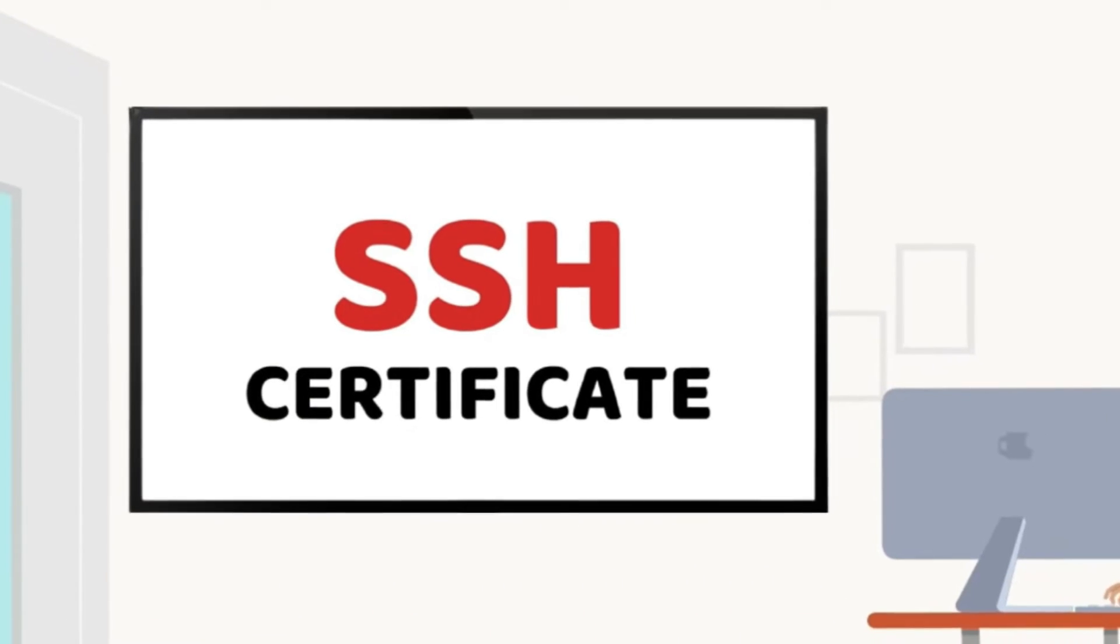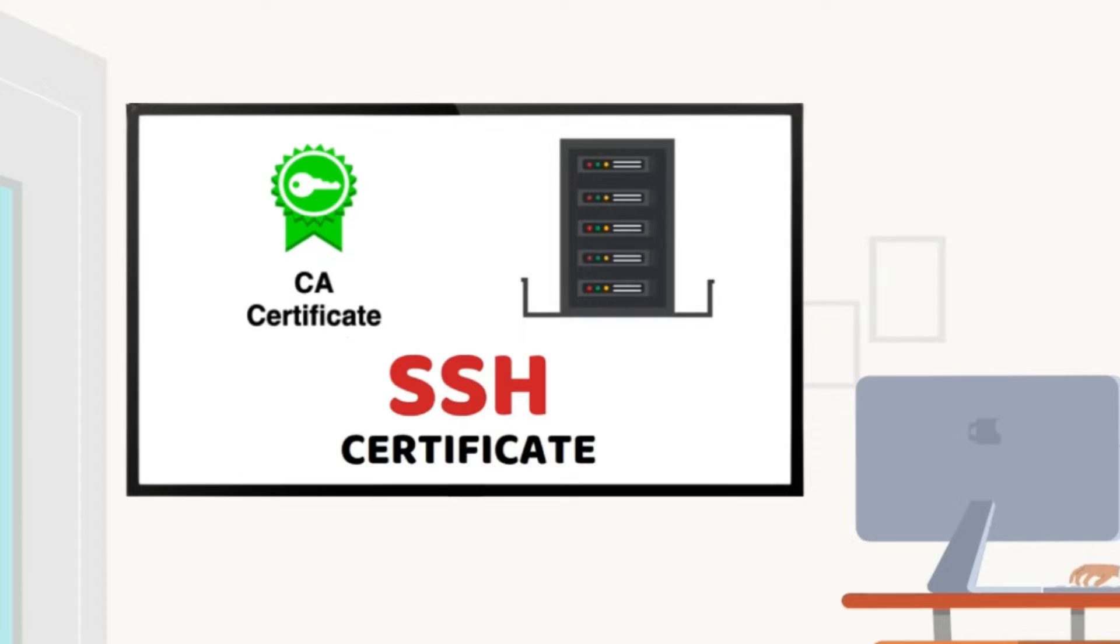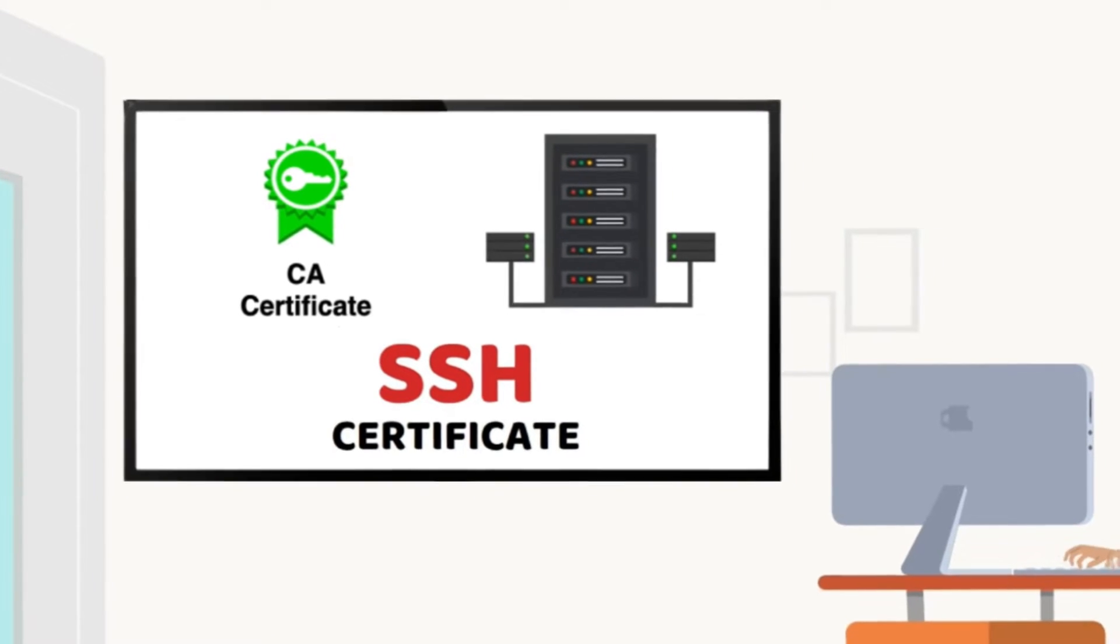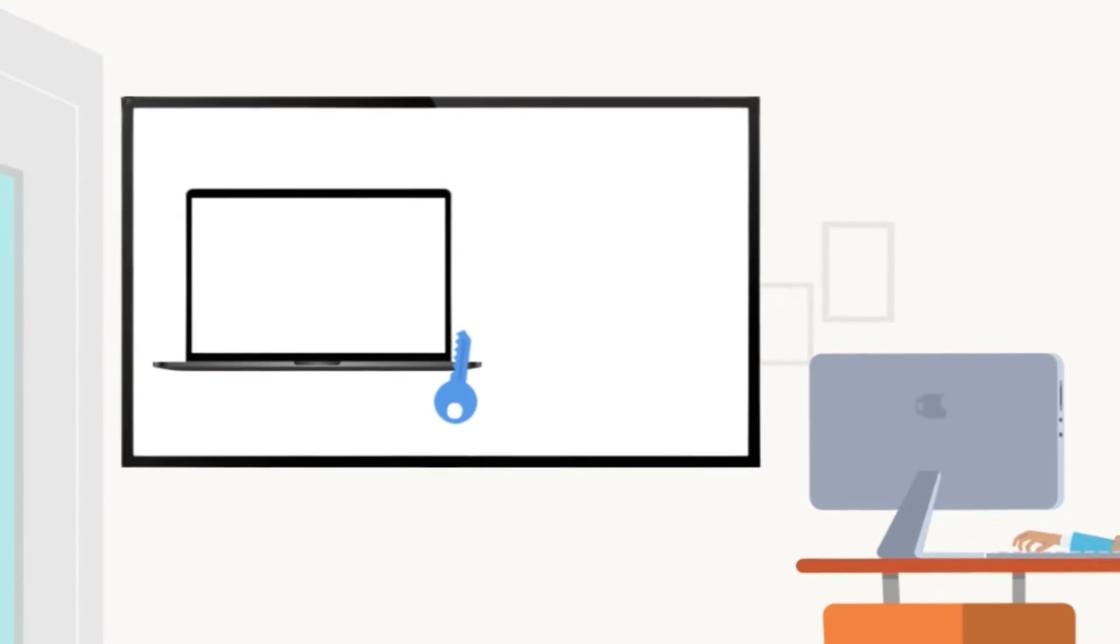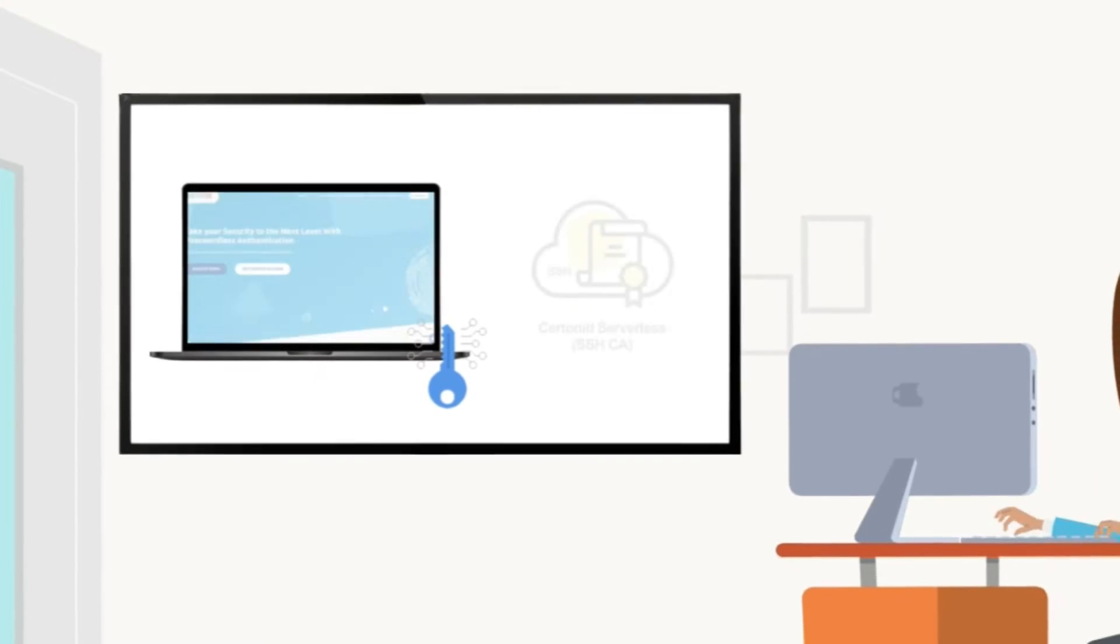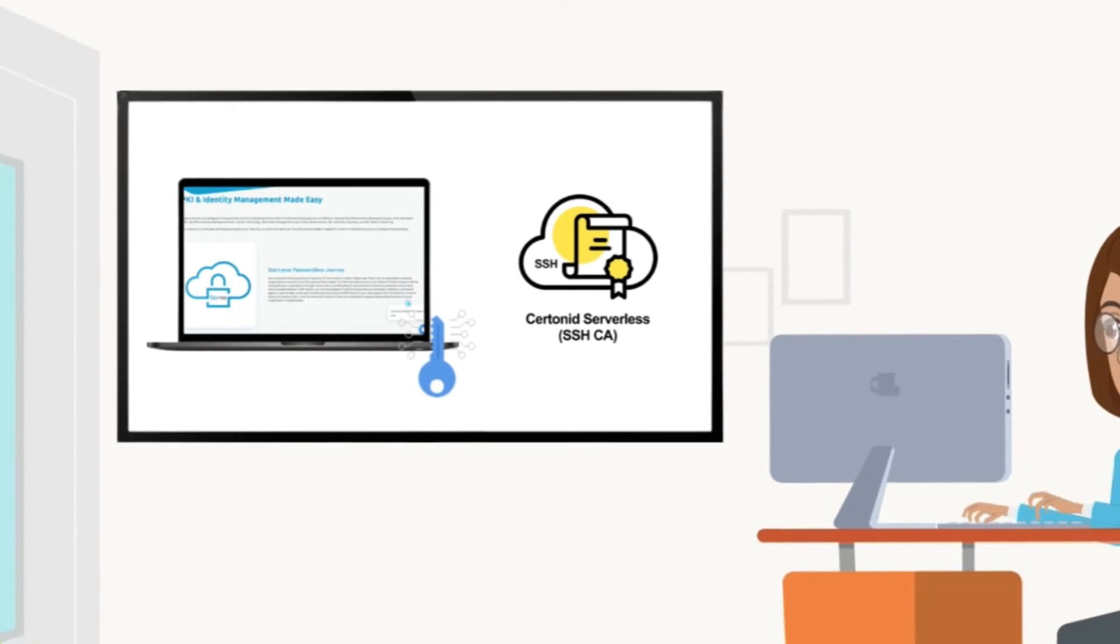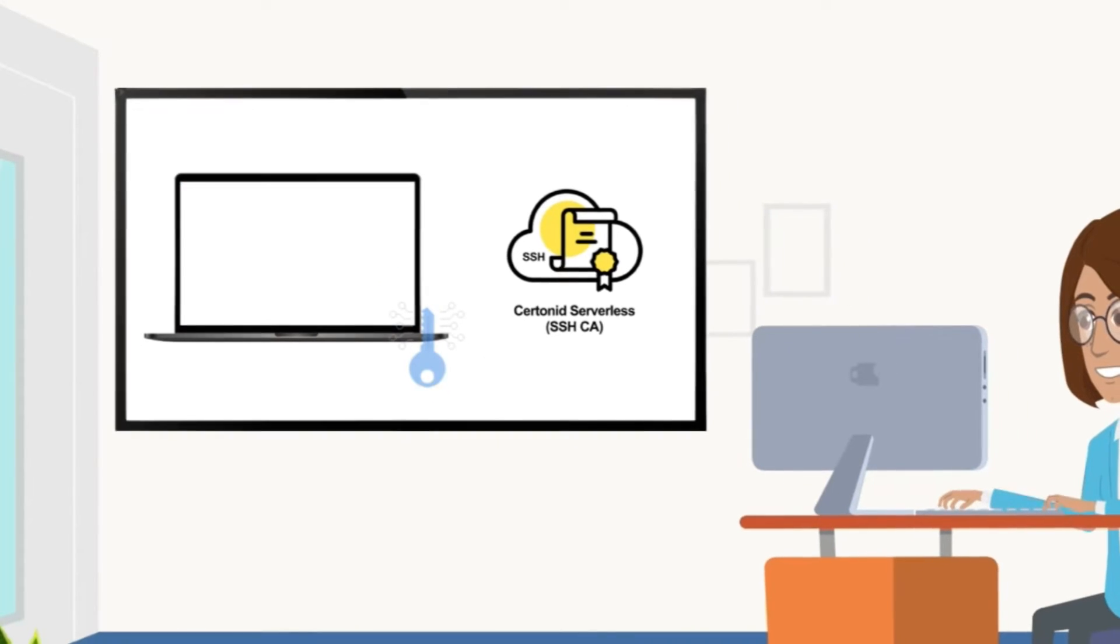When using SSH certificate authentication, the certificate authority's key is the one trusted by the server, meaning that any SSH key signed by the certificate authority's key will be trusted, and it'll stop working as soon as it expires.